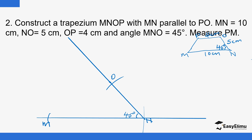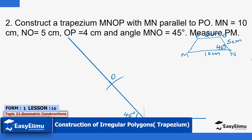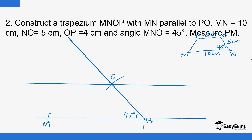Draw a line parallel to MN but passing through O using a set square. Then using O as center and radius 4 centimeters, make an arc to mark point P. Join M to P and your trapezium MNOP is drawn.